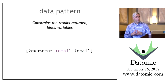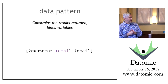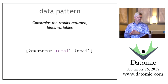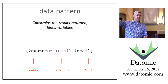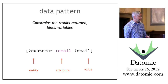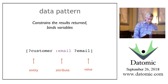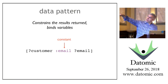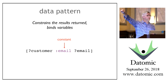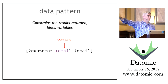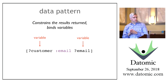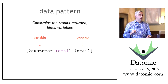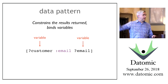When you want to make a query against a database, you create a data pattern. The data pattern both constrains results and binds variables. It's always in the same order: entity, attribute, value. If the thing in the pattern is a constant, that constrains the result. All things beginning with a question mark are variables that will be populated as a result of evaluating the clause. So we can plow through that.